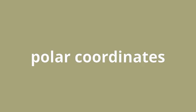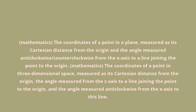POLAR COORDINATES: The coordinates of a point in a plane, measured as its Cartesian distance from the origin and the angle measured anti-clockwise/counterclockwise from the x-axis to a line joining the point to the origin.